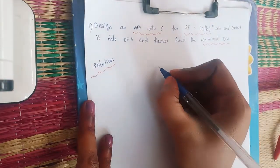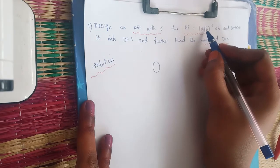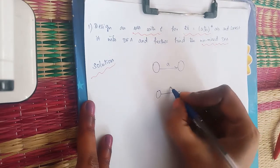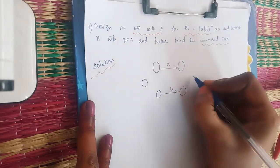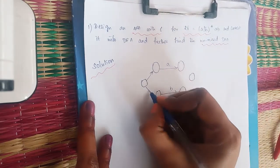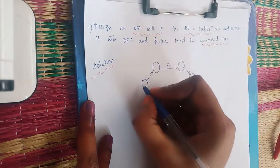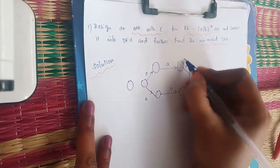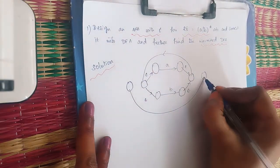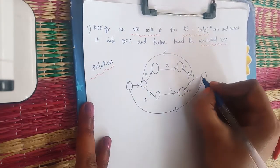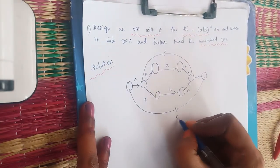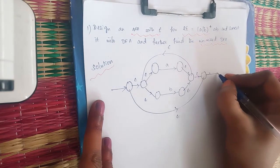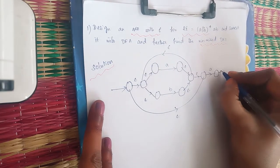For the expression (A+B)*, we apply Thomson construction. We will have the sub-expressions A and B. The Kleene star means we have forward and backward epsilon transitions. We have epsilon transitions connecting the components, and A and B as the individual transitions.